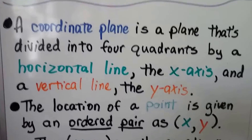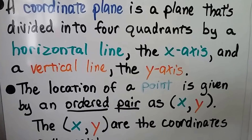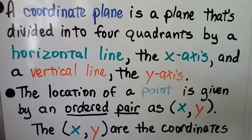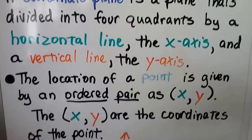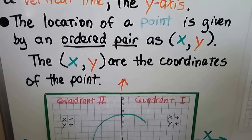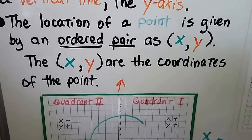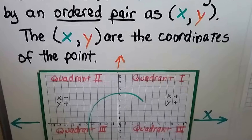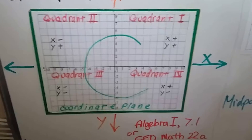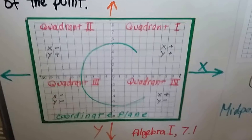A coordinate plane is a plane that's divided into four quadrants by a horizontal line, the x-axis, and a vertical line, the y-axis. The location of a point is given by an ordered pair as (x, y) — x comes first, then y. The x and y are coordinates of the point. So here we have a coordinate plane, and it looks a little busy because I drew in where the quadrants are.